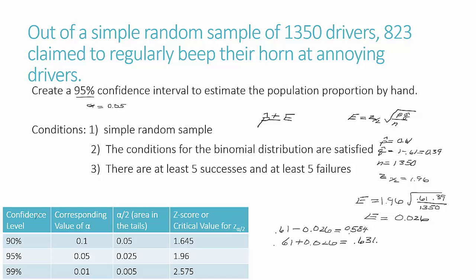And then taking 0.61 plus the error gives me 0.636. Our rounding rule is to have 3 significant digits. So these two numbers give me my confidence interval, and I can state that answer a couple of different ways. I can say 0.584 is less than p is less than 0.636. The other way is as an ordered pair with the lower limit first, then a comma, then the upper limit.